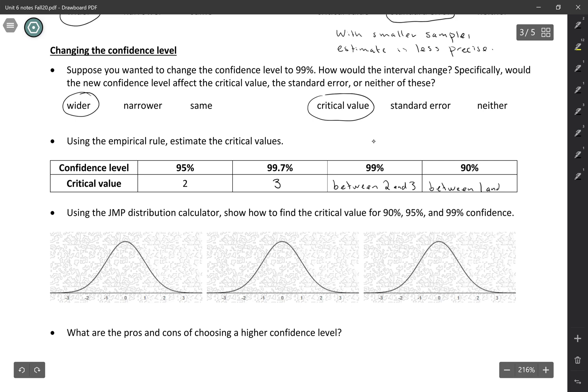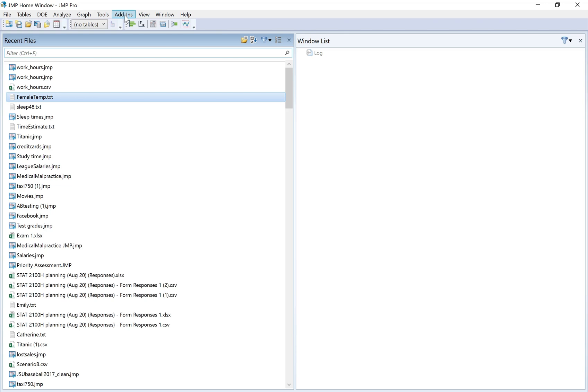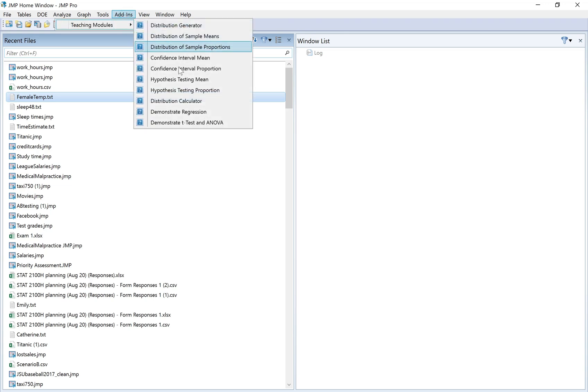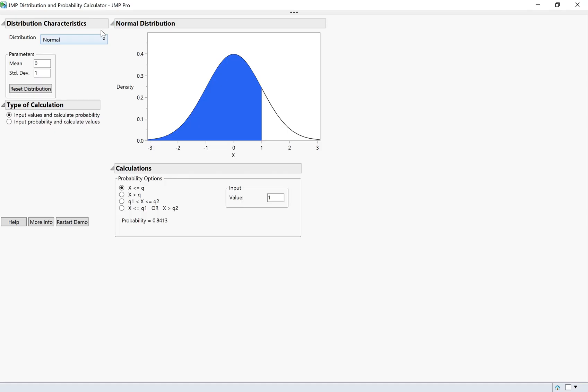So to calculate these values that aren't given by the empirical rule, we're going to use the normal distribution calculator. So let's start off with 95%. So we know that it's going to be here somewhere near two. It turns out it's not exactly two. So in JMP, I'm going to do add-ins, teaching modules, distribution calculator. That'll get me to my normal distribution. And for now, I'm leaving the distribution like it is.